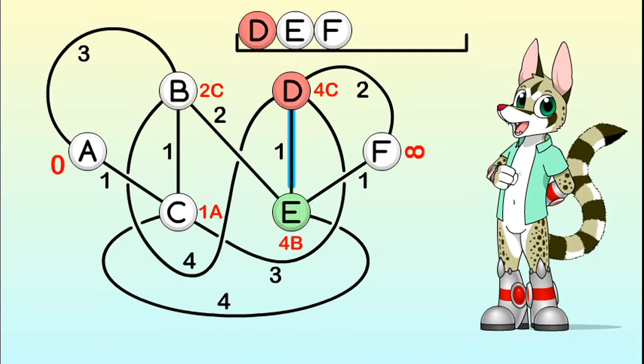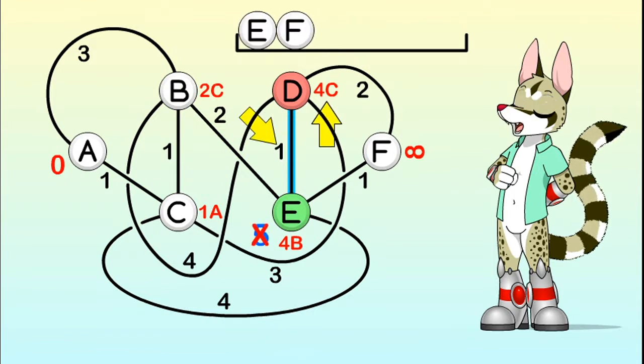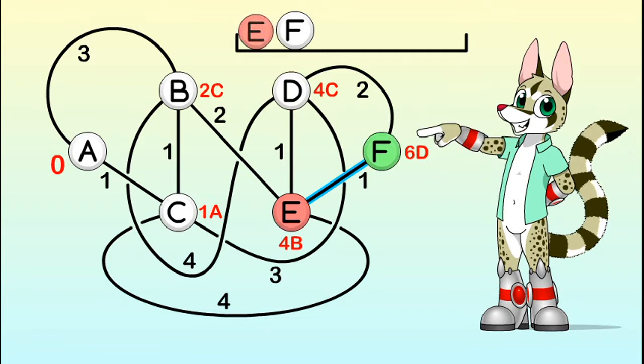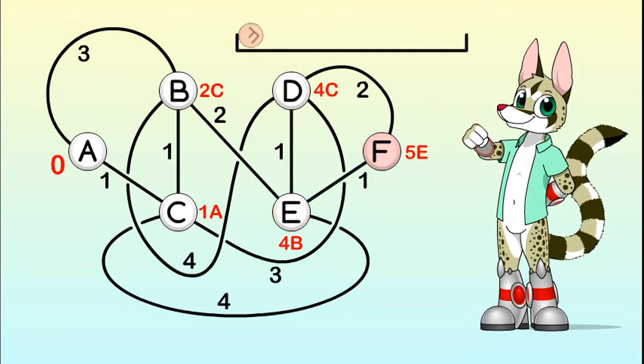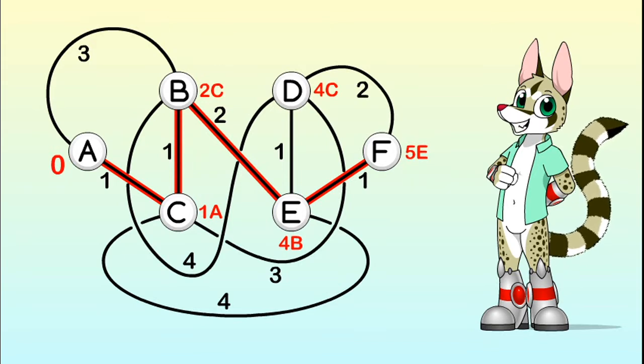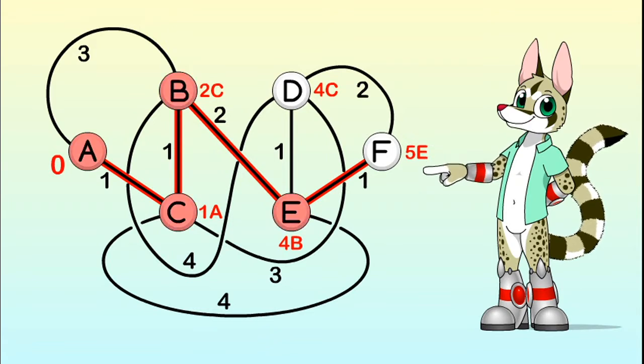This whole process is repeated until we have either visited all the vertices that can be reached by routes starting from vertex A, or until the goal vertex is no longer in the unvisited set. Once we are done, we will know from which vertex our goal F can most efficiently be reached, that is E. And we know that vertex E can be reached from B, then C, then A. So, as we knew from the start, the shortest route from A to F is ACBEF, which is exactly 5 units long. Now you know how Dijkstra's algorithm works.